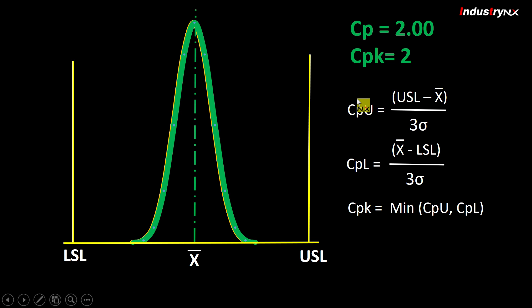CPK needs to be calculated if process is not centered to normal dimension, even if CP is good. In such cases, CPK needs to be calculated as per given formula.